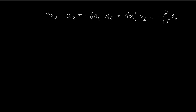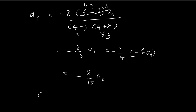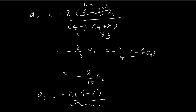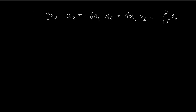For subsequent terms, if we use A6 to derive A8, substituting j equal to 6 into the recursion formula gives zero in the numerator, so A8 equals 0. All subsequent even-subscript terms — A10, A12, and so on — are all equal to 0. So for the even-subscript constants, only A0, A2, A4, and A6 have nonzero values.